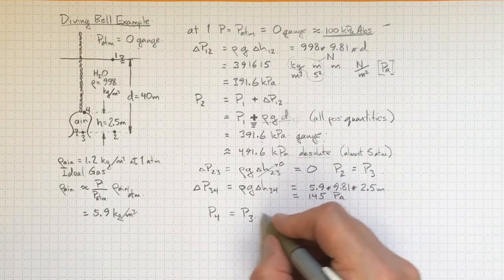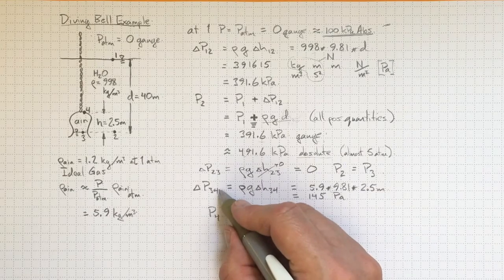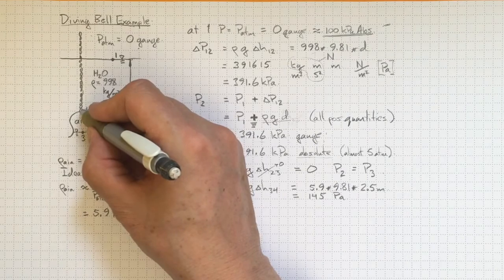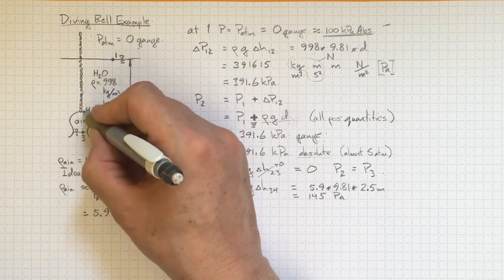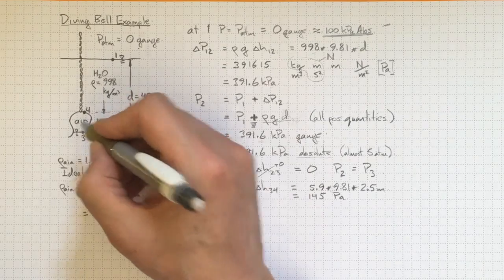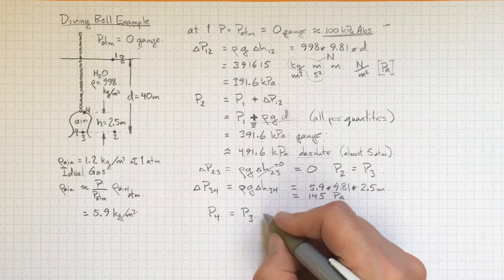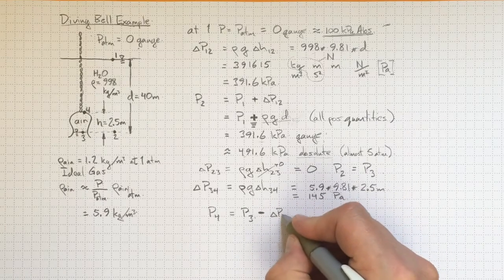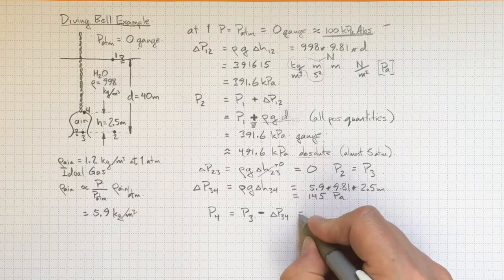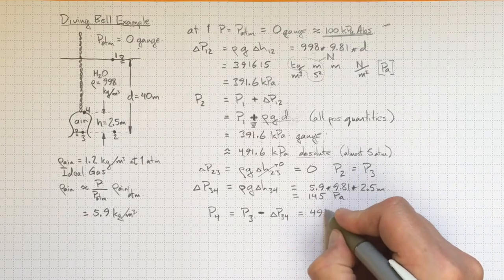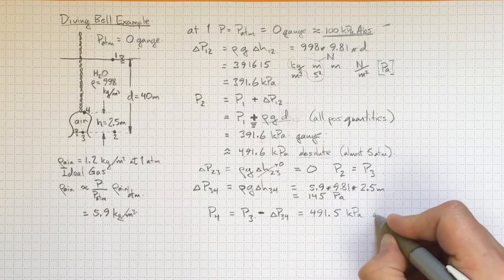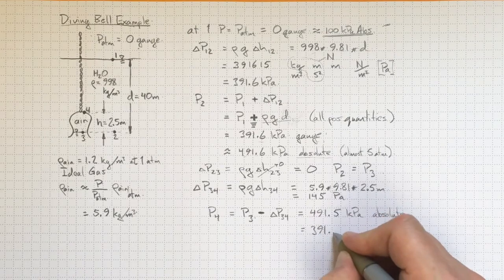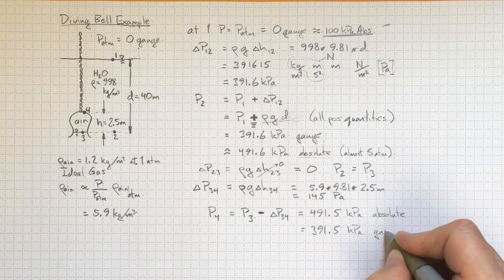And we're going to add delta p3 to 4. No, we're going to have to subtract it because we're going up in elevation. The pressure at location 4 is going to be a lower pressure than the pressure at location 3. So p3 minus, because we checked our physics, so we got our signs right, delta p from 3 to 4, which will give us 491.5 kilopascals absolute or 391.5 kilopascals gauge.